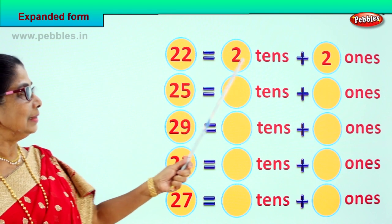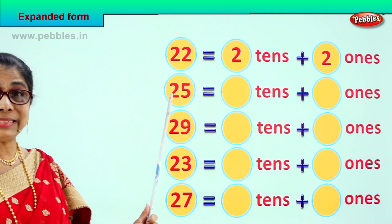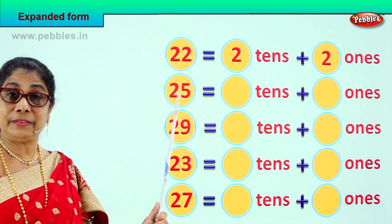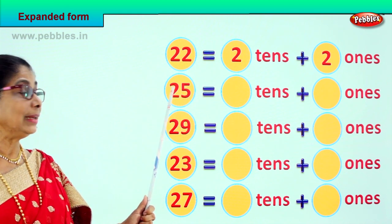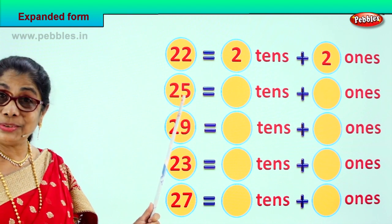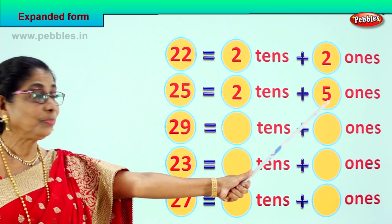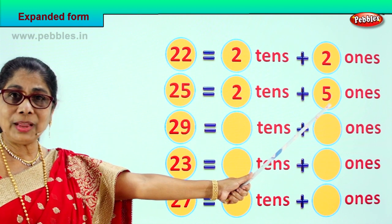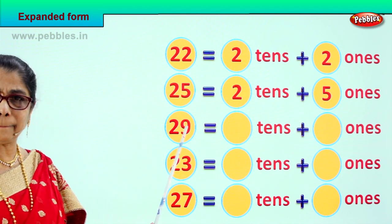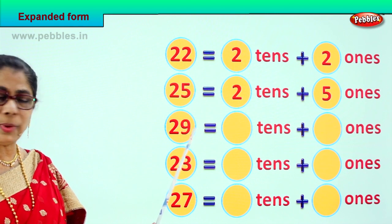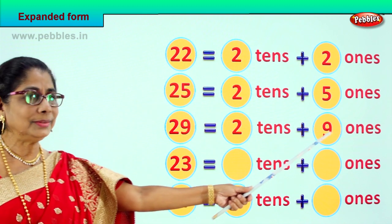The next number is 25. How many ones? How many tens? Good — 2 tens, 5 ones. Next, 29. How many tens? How many ones? 2 tens plus 9 ones. Good.